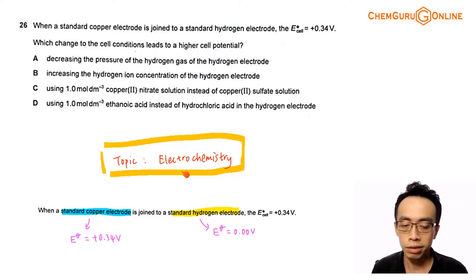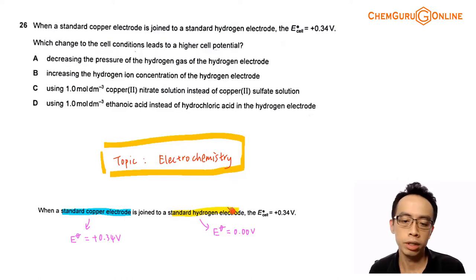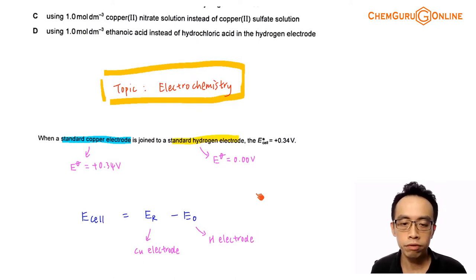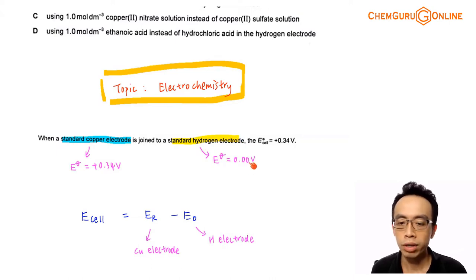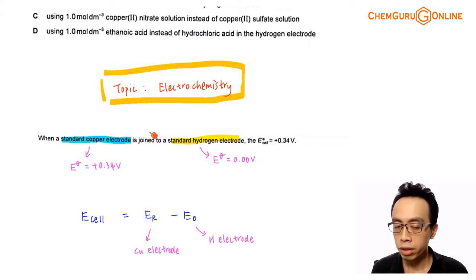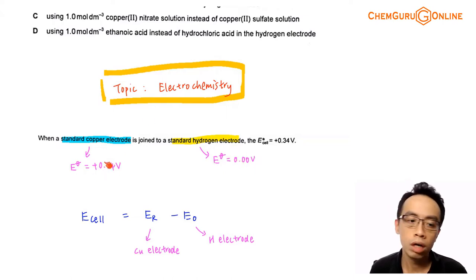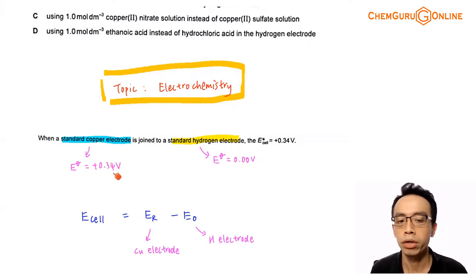The topic tested in this question is electrochemistry. When you have a standard copper electrode joined to a standard hydrogen electrode, the E cell is +0.34 volt because this electrochemical cell is straightforward — the E value for the standard hydrogen electrode is 0.00 volt, so the standard E value for the copper electrode is +0.34 volt, as confirmed by the data booklet.